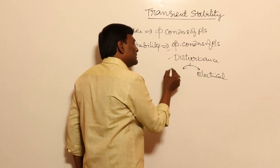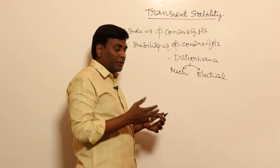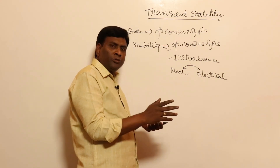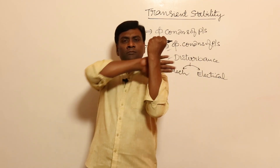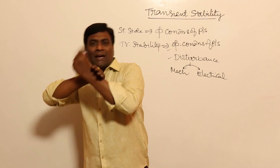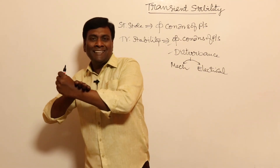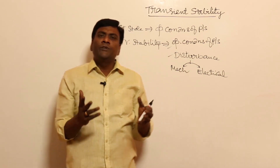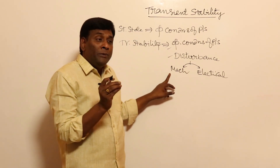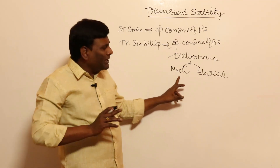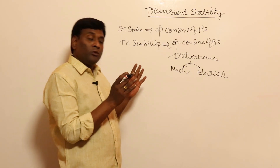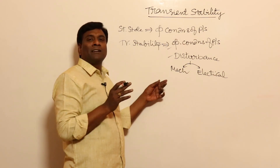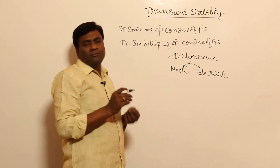Now let us think of mechanical disturbance. Mechanical disturbance means that all of a sudden the prime mover power input is increased or reduced. The moment prime mover power input is increased, delta should be increased, and the rotor will have swinging. Mechanical variation cannot be done almost instantaneously — it takes much time. So we are going to write some equations, but we don't give much focus on mechanical disturbance because the mechanical time constant is more.